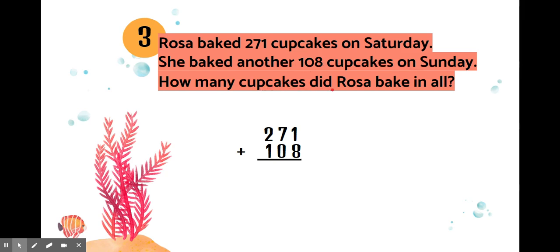How many cupcakes did Rosa bake in all? It means on Saturday and on Sunday all together. So it is addition. So let's add 1 plus 8 is equal to 9. 7 plus 0 is equal to 7.